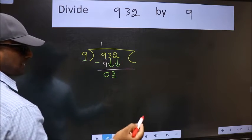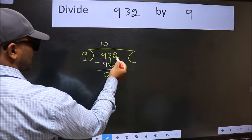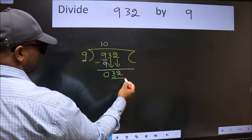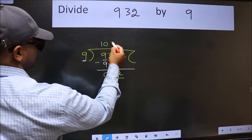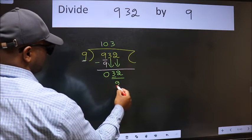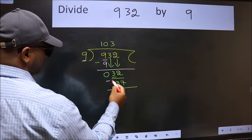And the rule to bring down second number is we should put 0 here. Then only we can bring this number down. Now 32. A number close to 32 in 9 table is 9.3 is 27. Now we should subtract. We get 5.